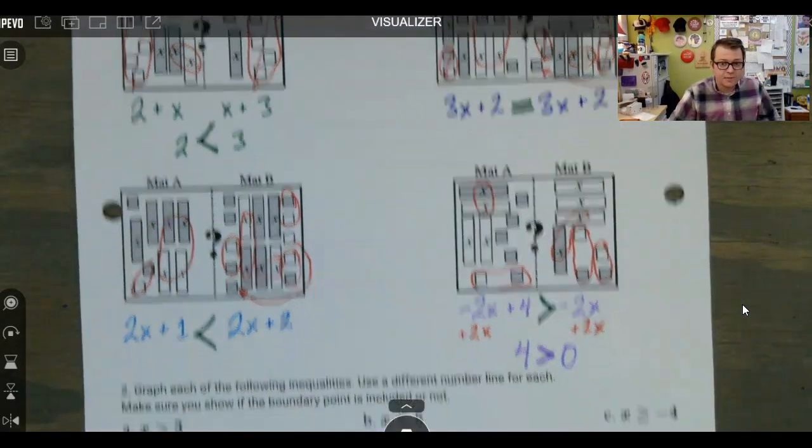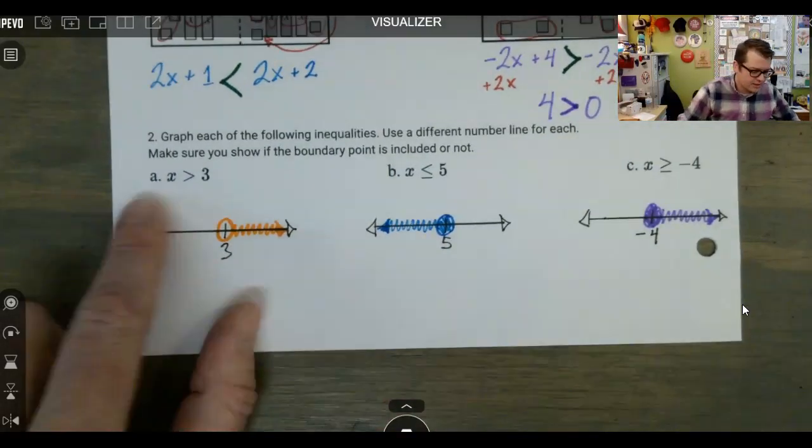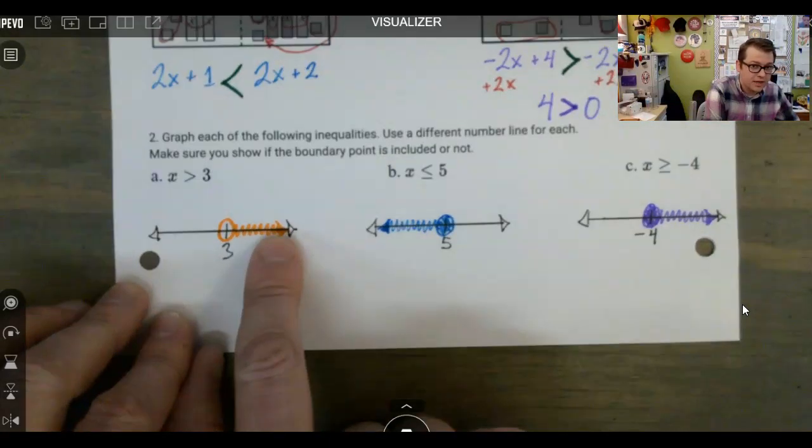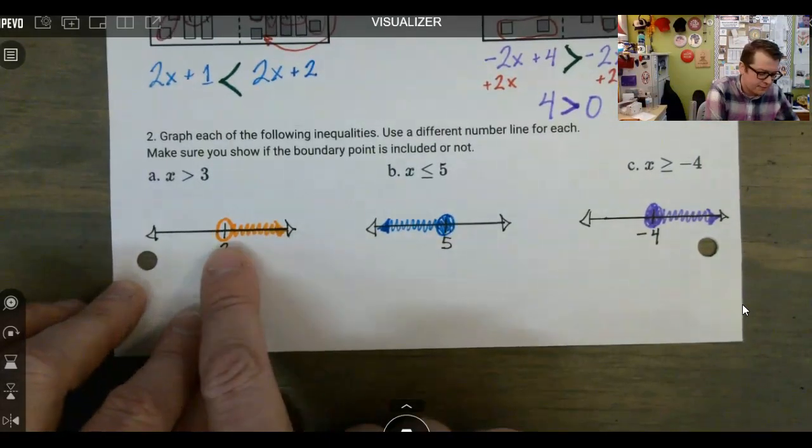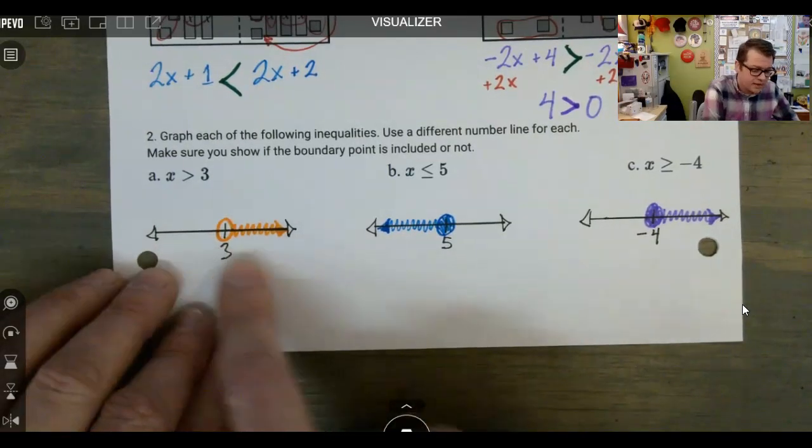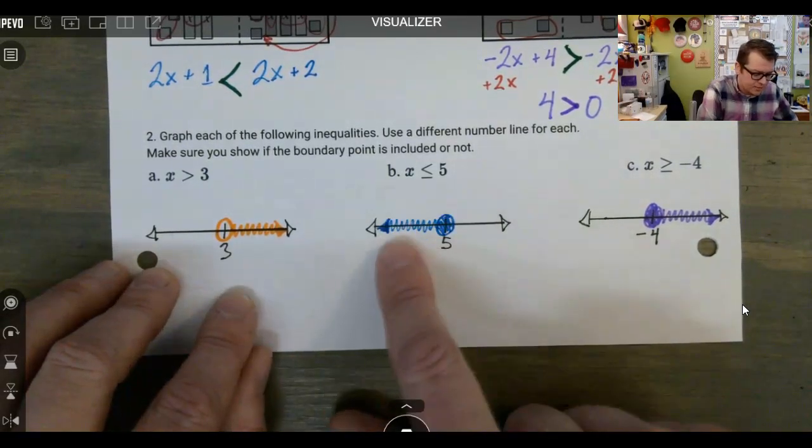Alright, moving on to graphing inequalities. So for X is greater than three, it is not allowed to be equal to. So we just shade greater than, make sure that dot is not filled in, but make sure it's obvious that there's a circle around that and it's not filled in.